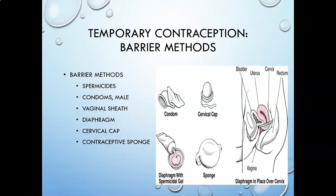If not pre-lubricated, a water-based lubricant should be used because it can break down latex if one is not used. Condoms are one of the few methods — other than abstinence — that will also prevent STIs or sexually transmitted infections. The other barrier methods don't prevent STIs. People who are high risk, such as those with multiple sex partners, should use a condom even if they have other means of birth control.